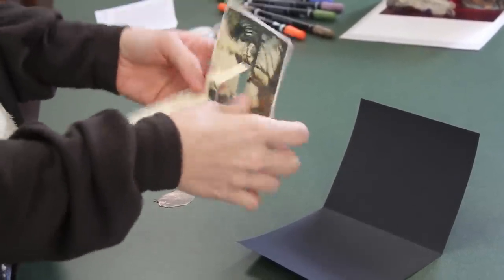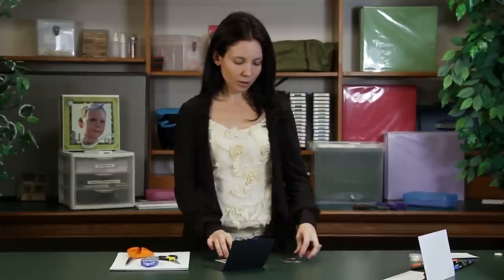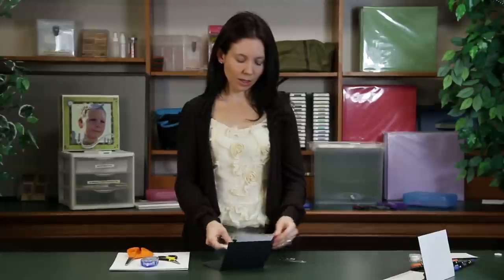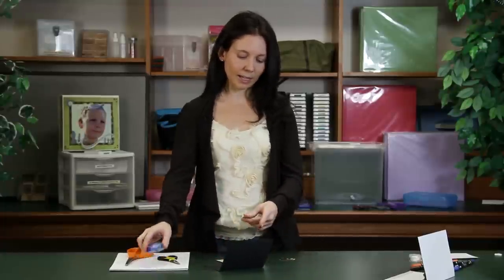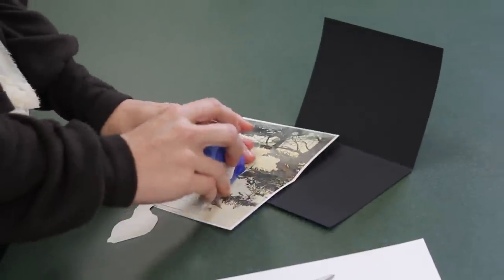You'll open your card, poke the slits through as we did in the last card, and then I'm going to adhere these before I adhere it to the main card. So, you can do it either way.